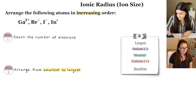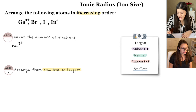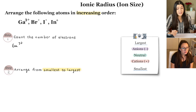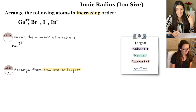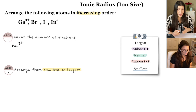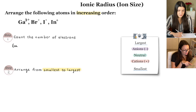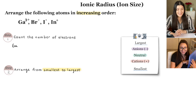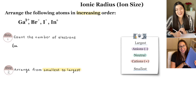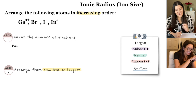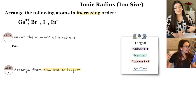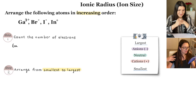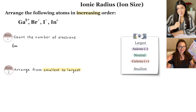Starting with gallium: to figure out the number of electrons, look at the periodic table. In a neutral atom, the number of electrons equals the number of protons, which is given by the atomic number. Gallium has atomic number 31, so a neutral gallium atom has 31 electrons.